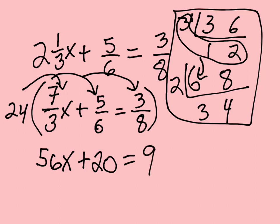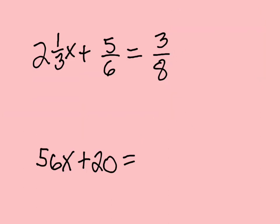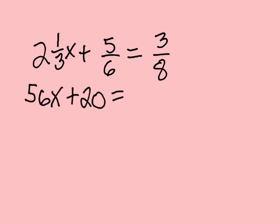And so now we have a much easier problem to solve. And we have this 56X plus 20 equals 9. And we can get rid of all this other stuff. Let's get rid of all of this, and I'm just going to put this up a little bit higher. And somehow I lost my 9, but that's okay.